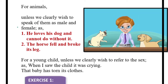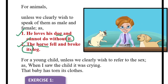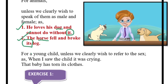For example: 'He loves his dog' — for the dog, you will write 'it' because in the sentence you cannot understand whether the dog is a boy dog or a girl dog. Second sentence: 'The horse fell and broke its leg' — in sentence number two, can you understand whether this horse is a boy horse or a girl horse? No. That is why you will write 'its' — not 'his leg' or 'her leg' but 'its leg.'